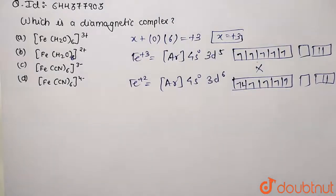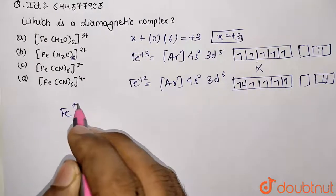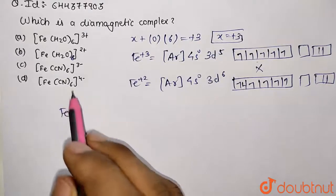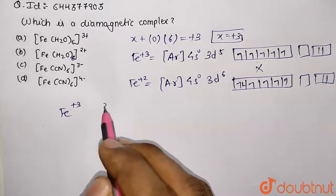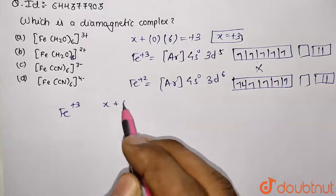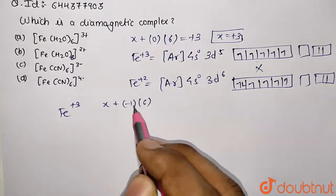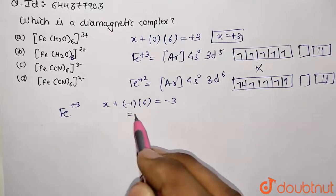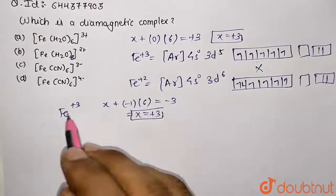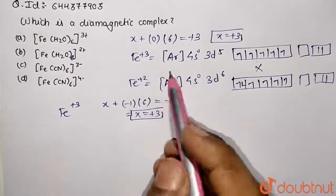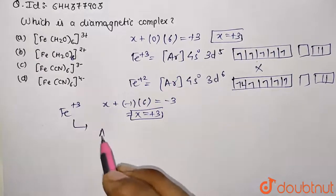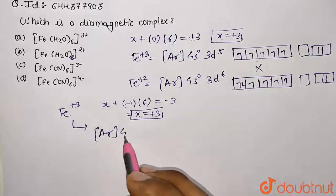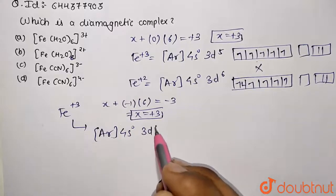the third complex which is given as Fe positive - we have calculated the oxidation state by using this equation: x plus CN is negative ligand so minus 1 multiplied by 6, overall charge is minus 3, so this turns out to be value of positive 3. That's why we have mentioned over here iron third. Similarly you can calculate, this will be the configuration argon. Now we are having 4s will be zero and you are going to get 3d5 just as the previous one.